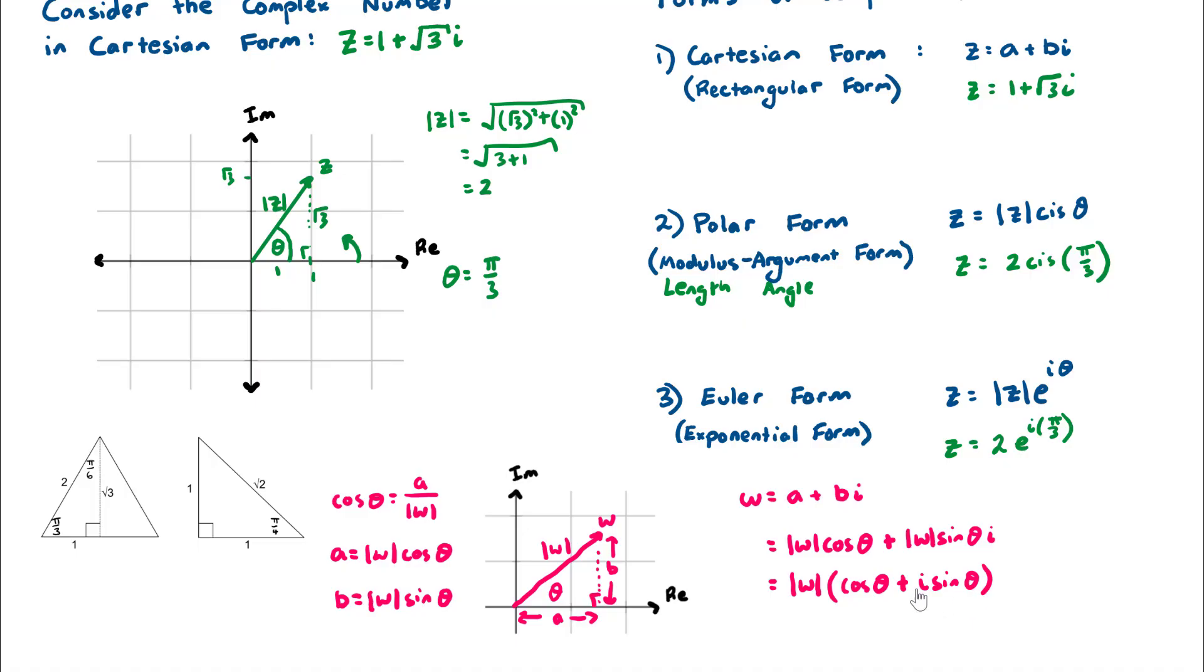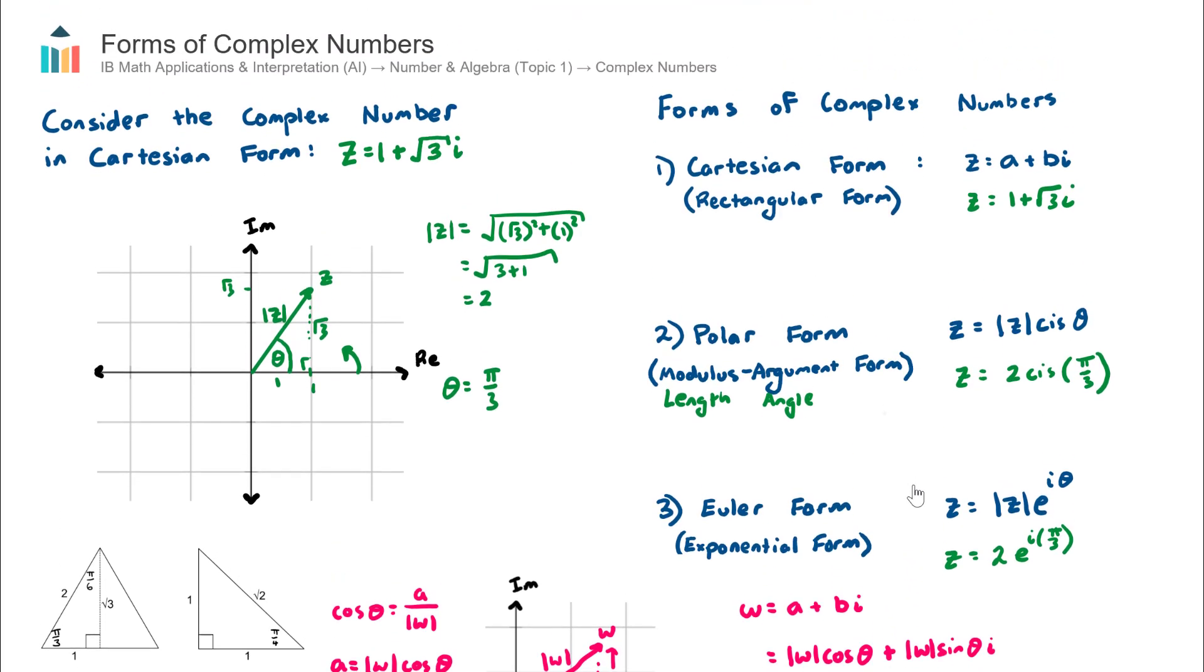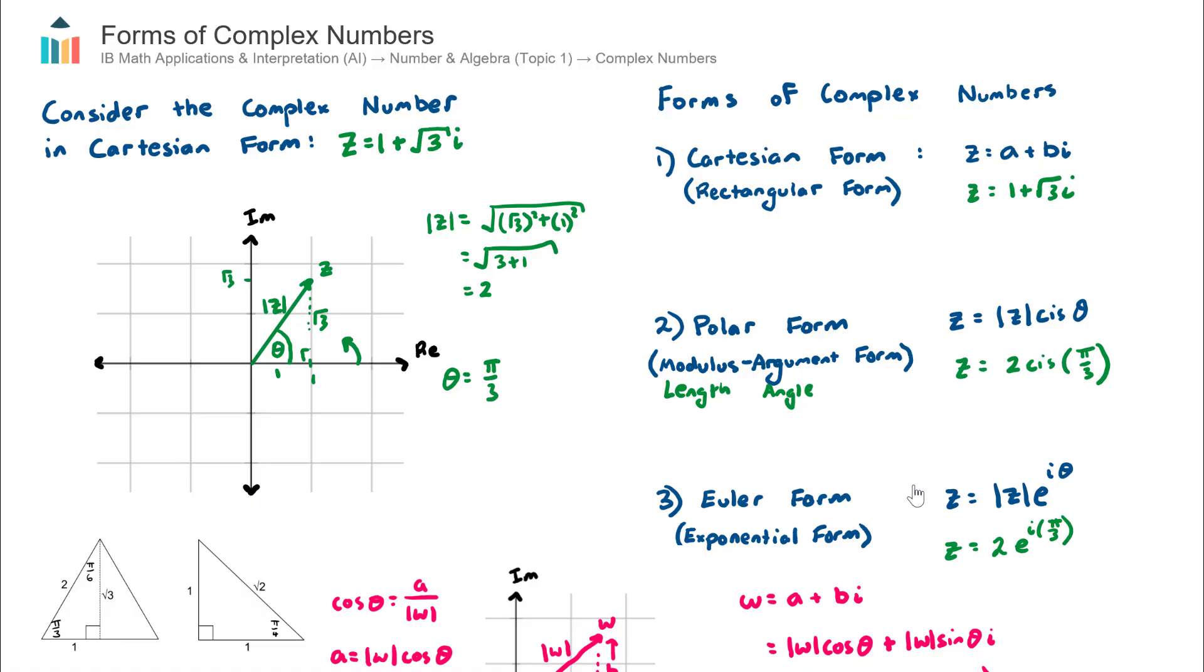Now it will get annoying over time to continue writing cos theta plus i sin theta. So we have a shorthand way of writing cos theta plus i sin theta. And that's what we call cis theta. The cis being the C being for the cos, the i being for the i, and the S being for the sin. So this is equal to cis theta. So you can see there how we went from Cartesian form, a very quick proof down into polar form. The modulus, cis and the argument. Okay. So that concludes our video on the three different forms of complex numbers.